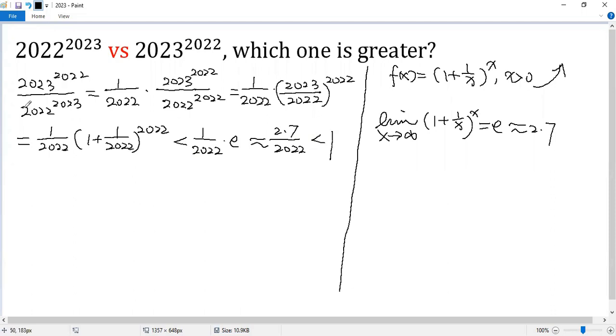That means the quotient is less than 1. So the numerator is less than the denominator. Therefore, 2023^2022 is less than 2022^2023.